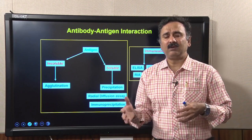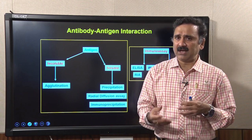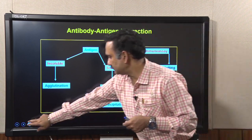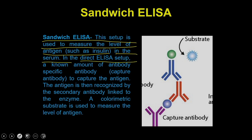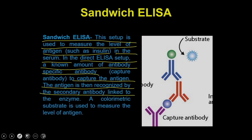Now, subsequent to that, we are also going to discuss the sandwich ELISA. Sandwich ELISA is a different type of setup used to measure the level of antigen such as insulin in the serum. In this setup, a known amount of a specific antibody is used to capture the antigen, which is then recognized by a secondary antibody linked to an enzyme.